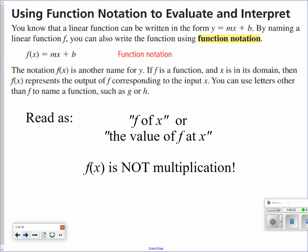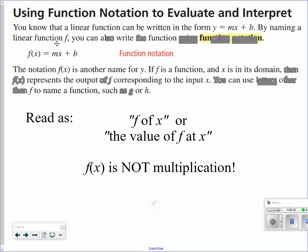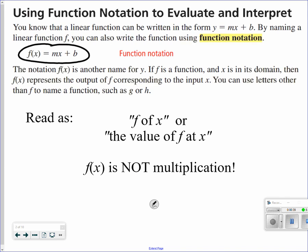You know that a linear function can be written as y equals mx plus b, but by naming something as a function, you'll write it as f of x equals mx plus b. This is considered function notation. f of x is another name for y. If f is a function and x is the domain, then f of x represents the output of the corresponding input of x.